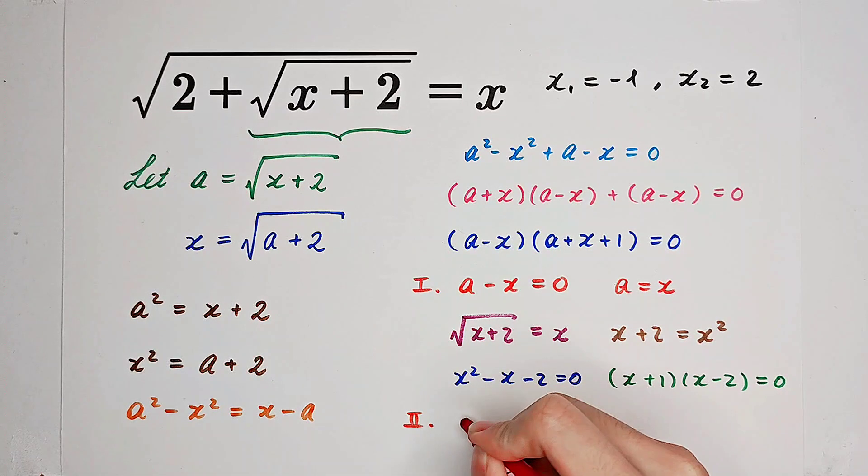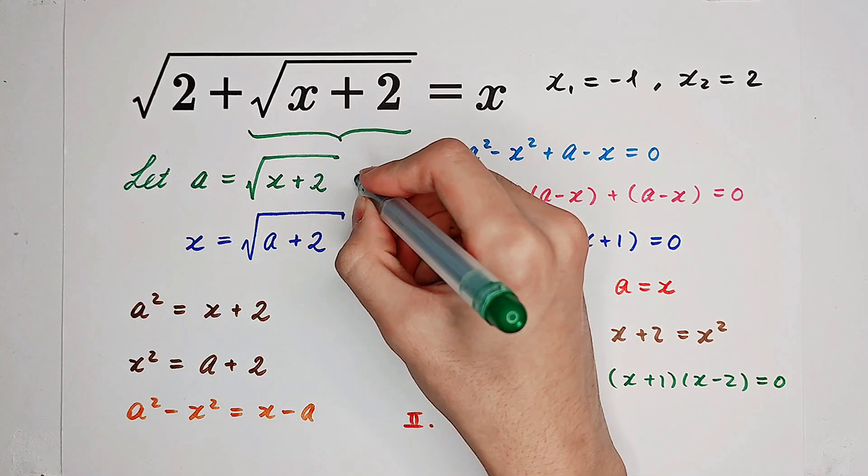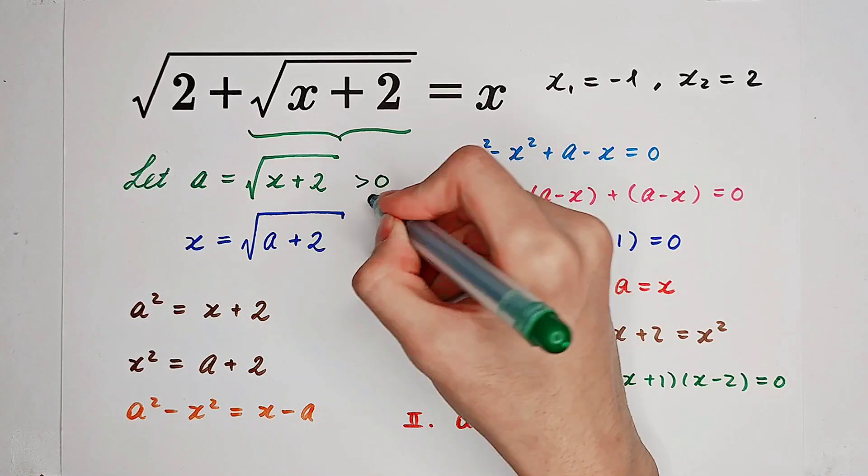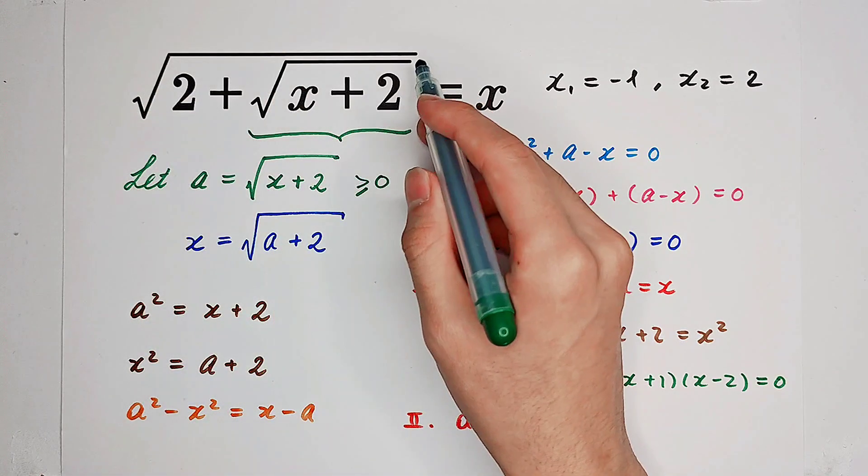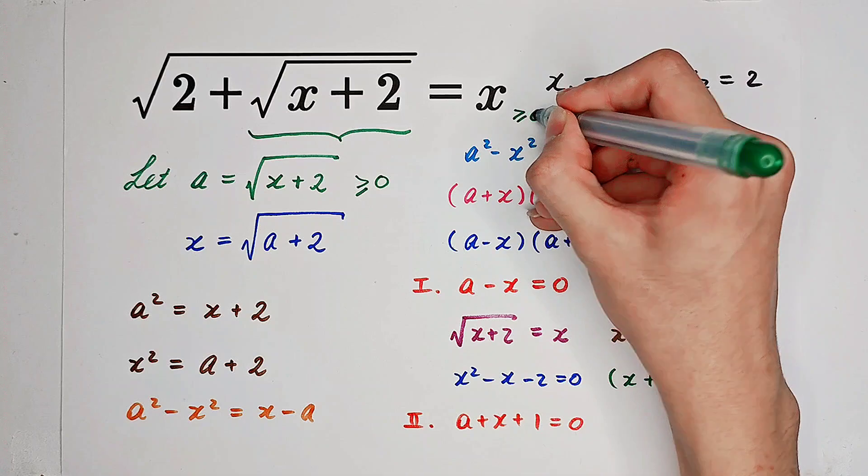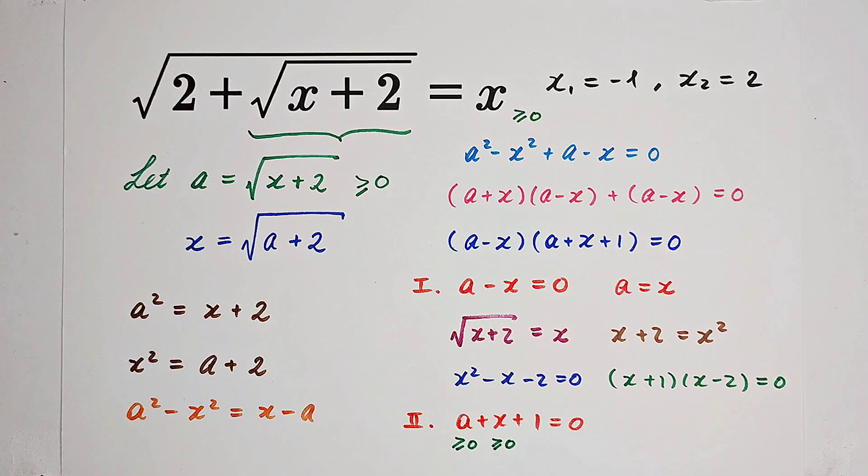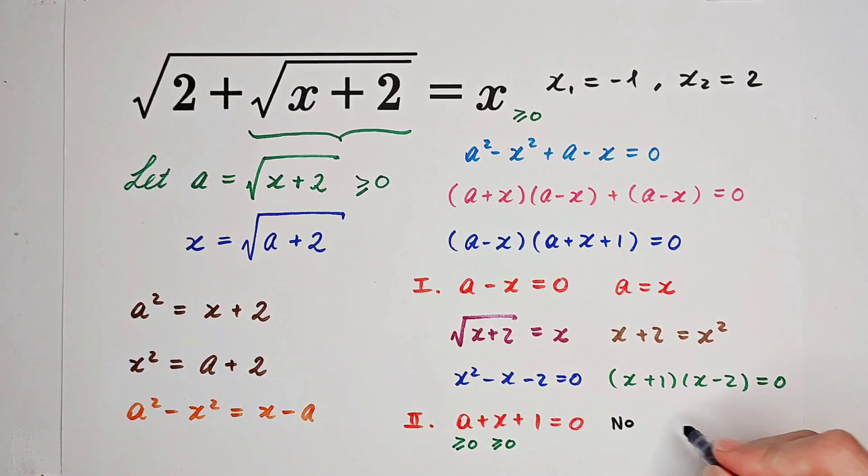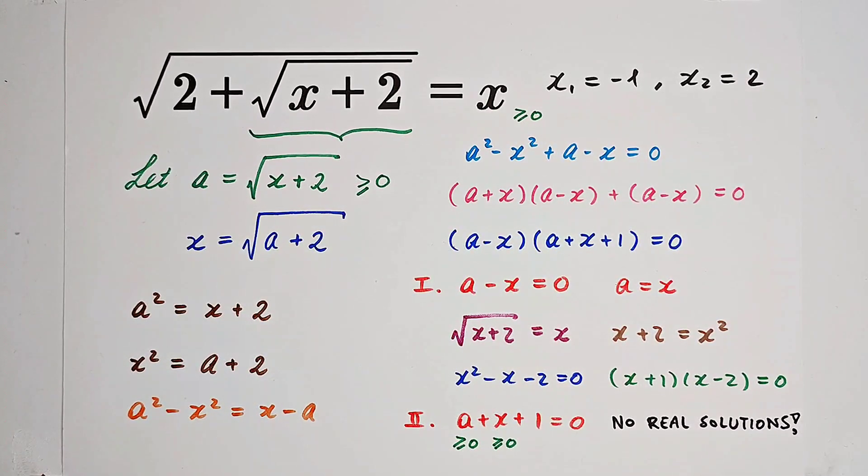And in our second case, we have a plus x plus 1 equals 0. Now pay attention: a is square root of x plus 2, which means this is non-negative, so greater than or equal to 0. And x is also a value of a square root, so x is non-negative as well. So a plus x plus 1 should be greater than or equal to 1. However, 0 is not greater than or equal to 1, so that means this equation doesn't have any solutions. No real solutions in our second case.